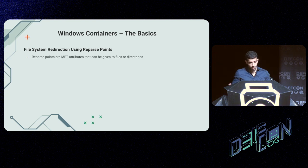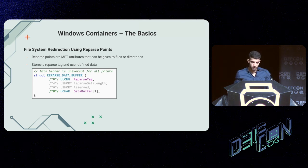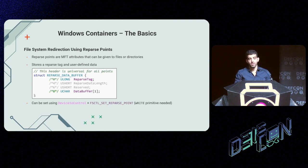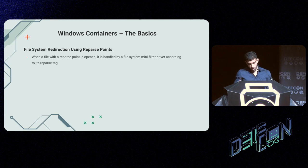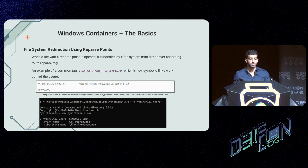A reparse point is an MFT attribute that can be given to files or directories. Its reparse point data is typed — a registered tag identifier, or reparse tag, determines the data structure of the reparse point data itself. It can be set using the DeviceIoControl function alongside the set reparse point file system control code. Note that a write primitive is needed for this to succeed. A good example is symbolic links: a directory that functions as a symbolic link contains a reparse point with the path to the correct destination, as seen with the C:\Users\All Users folder redirecting to C:\ProgramData.